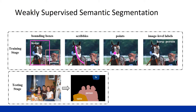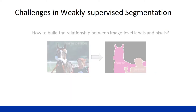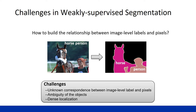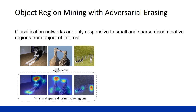Among this information, the simplest and most efficient one that can be collected for training is image-level labels. For this weakly-supervised scheme, the key problem is how to build the relationship between image-level labels and pixels. Currently, several top-down attention approaches are proposed to roughly localize objects with classification networks. We found that classification networks are only responsive to small and sparse object regions.